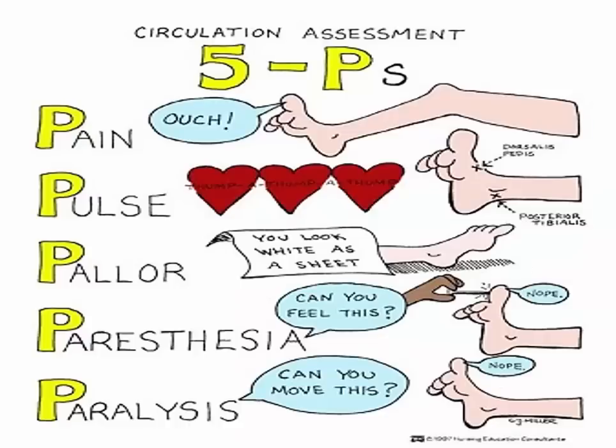Circulation assessment includes the five P's. Pain — determine where pain is located and if it is worse or better; worsening pain may indicate increased edema, lack of adequate blood supply, or tissue damage. Check the pulse — assess peripheral pulses, especially those distal to the fracture site, and compare with those on the unaffected side; pulses should be strong and equal. Pallor — observe the color and temperature of the skin around the fracture site and perform the capillary refill test.